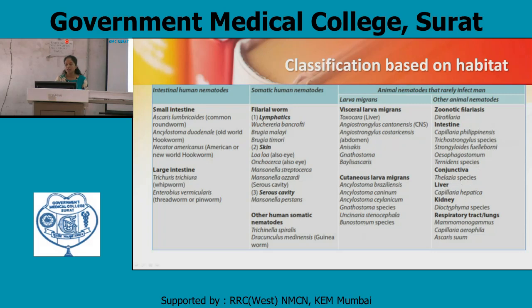In the liver: Capillaria hepatica. Kidney: Dioctophyma species. Respiratory tract and lungs: Mammomonogamus, Capillaria aerophila, and Ascaris suum.